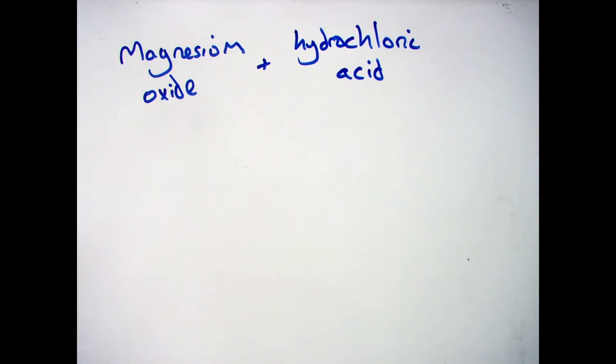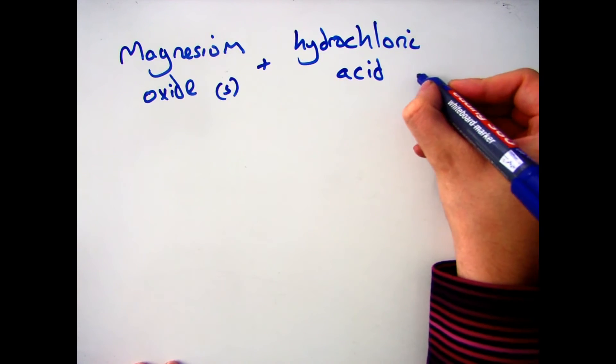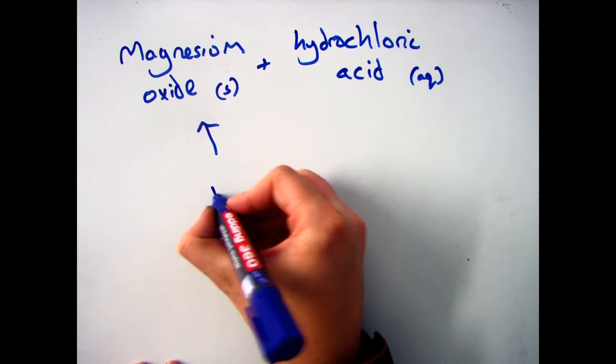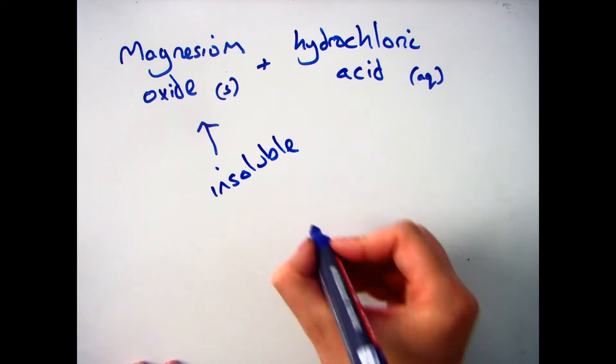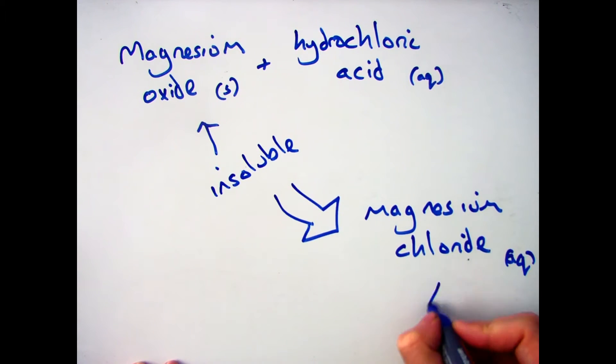For example, magnesium oxide, which is an insoluble solid, and hydrochloric acid, which is an aqueous solution—how can you prepare a salt of magnesium chloride?